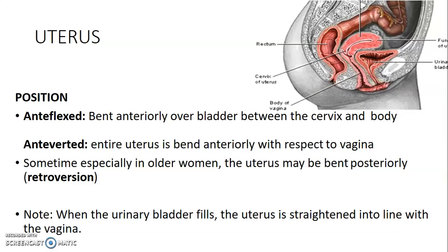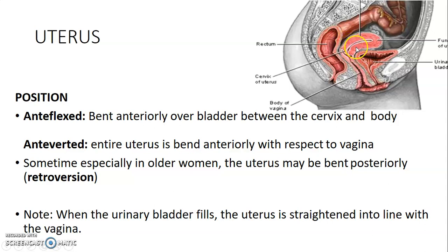The uterus is usually anteflexed and anteverted. Anteflexed means it is bent anteriorly over the bladder — the bending occurring at the junction between the cervix and the body of the uterus. Anteversion means the entire uterus is tilted anteriorly with respect to the vagina. Some people have a retroverted uterus, and when the bladder fills it tends to slightly straighten the position of the uterus.